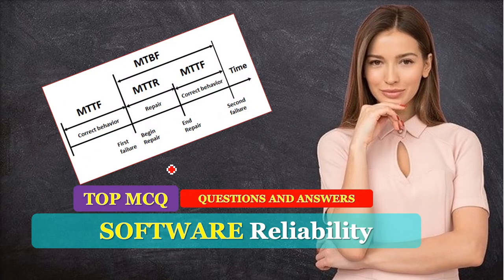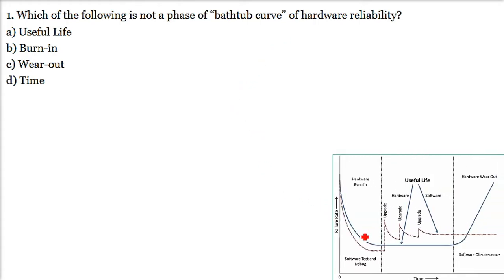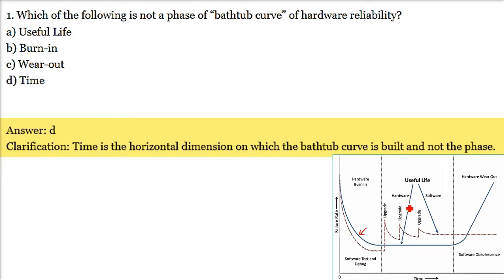In software reliability, we are taking MCQs - multiple choice questions. Which of the following is not a phase of the bathtub curve of hardware reliability? This blue line is the bathtub curve for hardware reliability. The first part is hardware burn-in, the second part is useful life, and the third part is hardware wear-out. Time is the x-axis, and failure rate is the y-axis.